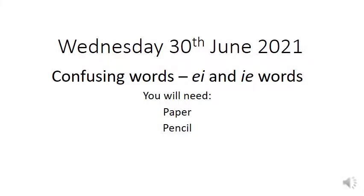Hi everybody, it's Wednesday the 30th of June and this is our English lesson for today. We're going to be focusing on a little bit of handwriting to begin with and then we are looking at some spellings today, looking at confusing words. So words that have EI and IE words. So for today you're going to need paper and pencil.